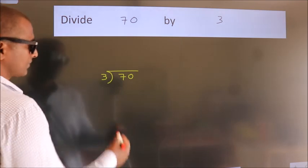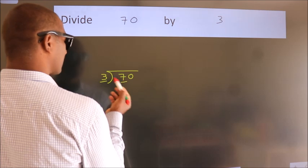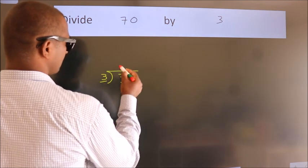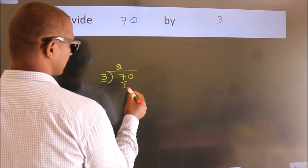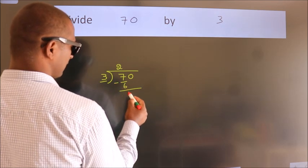Next, here we have 7. Here 3. A number close to 7 in the 3 table is 3 times 6. Now, we should subtract. We get 1.